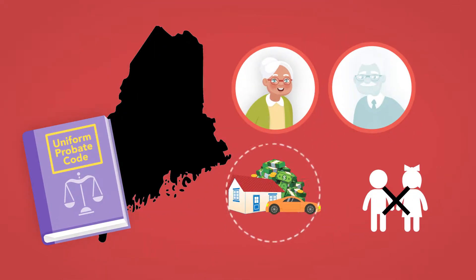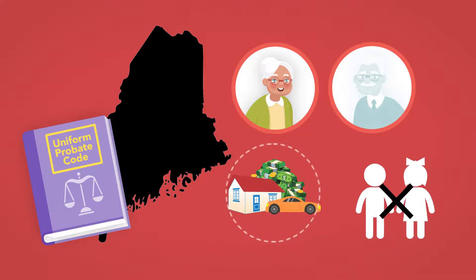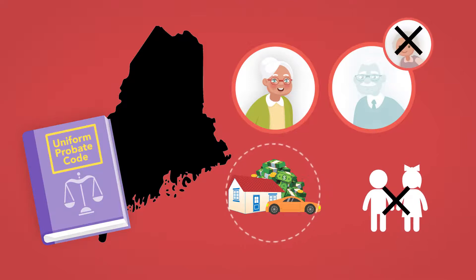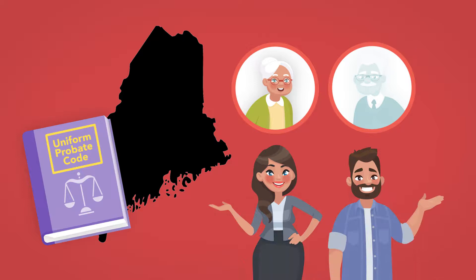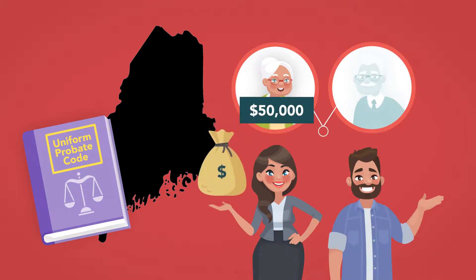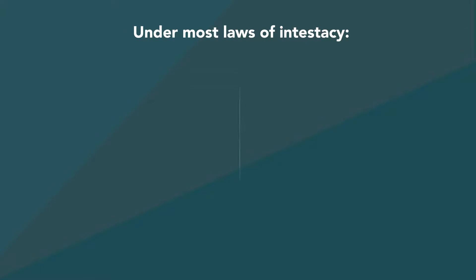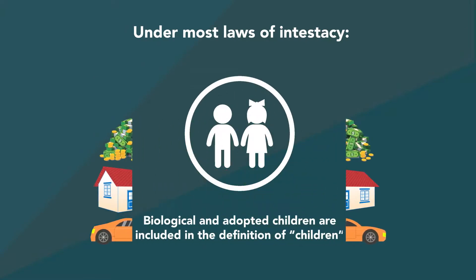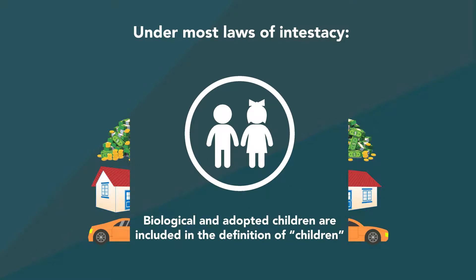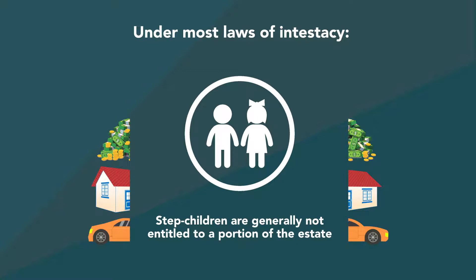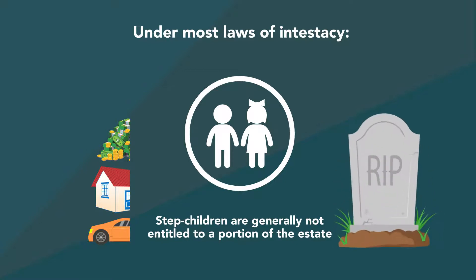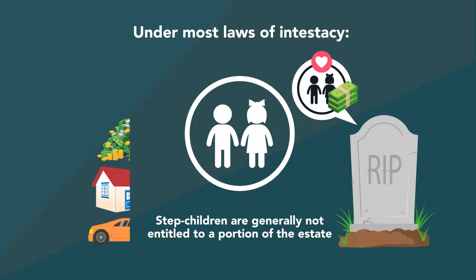In another difference from the code, Florida law does not provide for parents to inherit from their children unless the child dies without a spouse or descendants. Similarly, Maine provides a spouse with the entire estate where there are no living children or parent of the deceased person. If there are surviving children of a deceased person who are also the spouse's children, the spouse receives $50,000 and splits the balance with the surviving children — a departure from the code. It should be noted that under most laws of intestacy, only biological and adopted children are included in the definition of children.